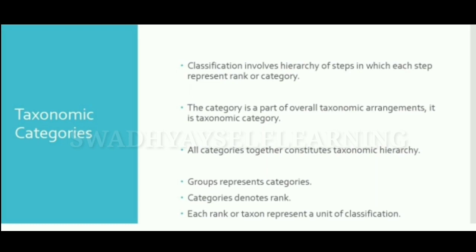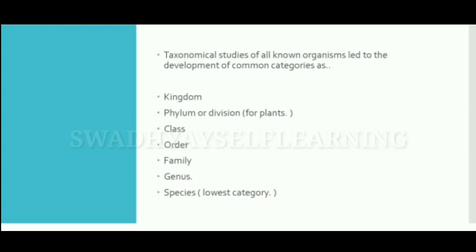Each category is a part of the overall taxonomic arrangement. All categories together constitute the taxonomic hierarchy. A taxon is the unit of classification. Groups represent categories; categories denote rank. Each rank or taxon represents a unit of classification.